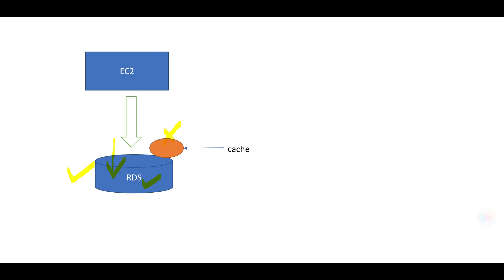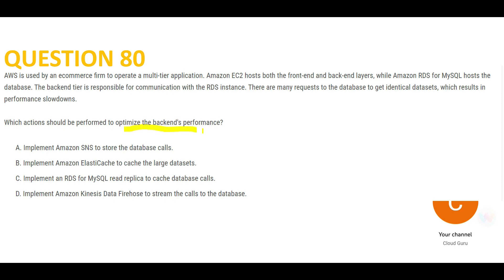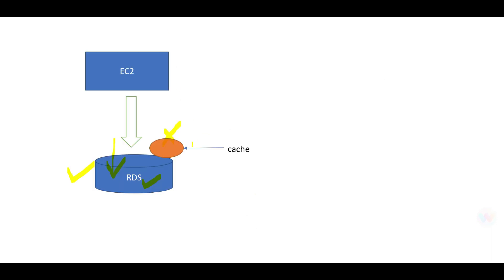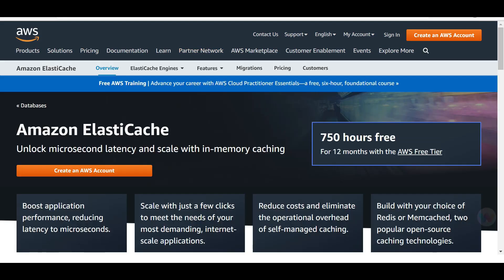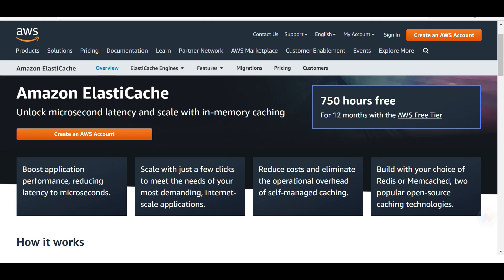This approach reduces the load on the database and optimizes the backend's performance. Users get data much faster — they don't know whether it's coming from the database or the cache, and they say the performance is awesome. Hence, ElastiCache is the way forward. This documentation clearly states it will reduce your latency to microseconds.